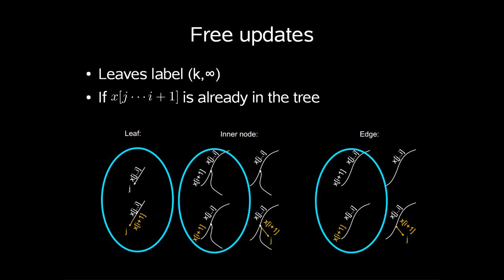Next, is if x[j..i+1] is already in the tree, the update is automatic, so the first case of inner node and edge is also a free action as we have to do nothing. Now the only real operations is branching on an inner node and edge.